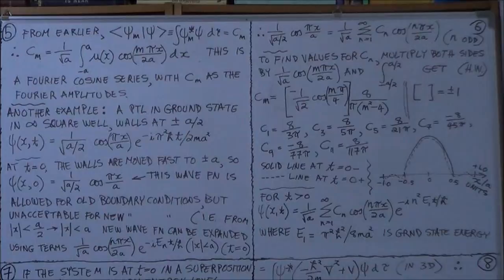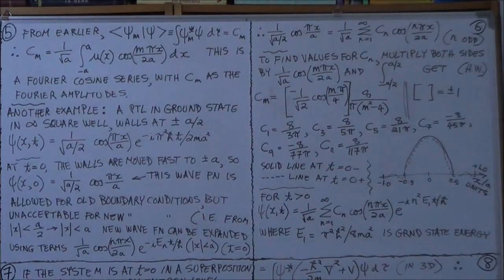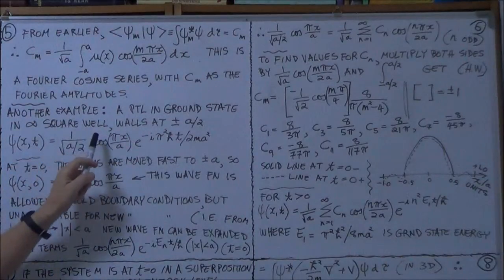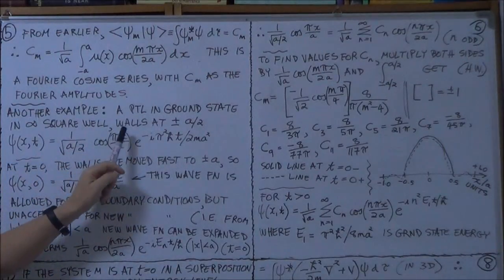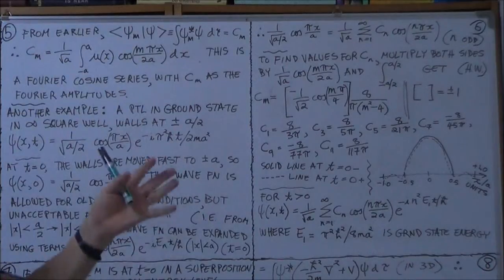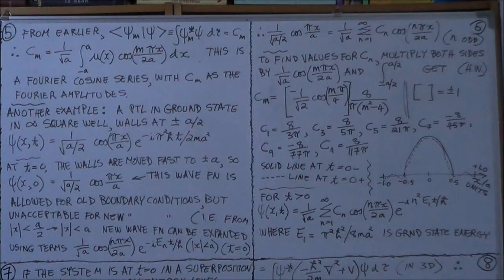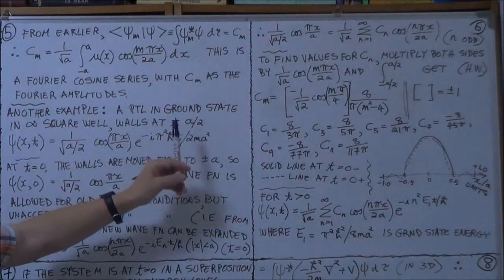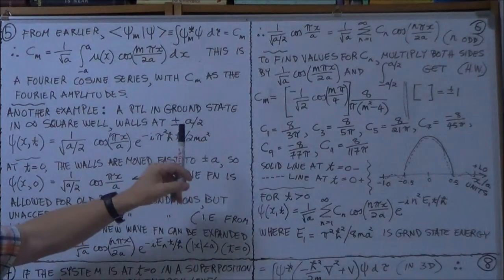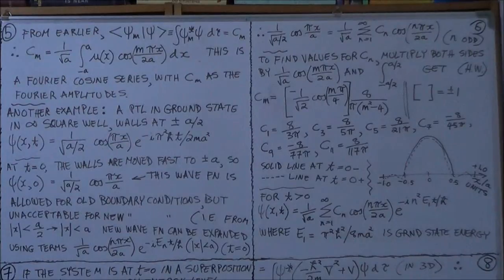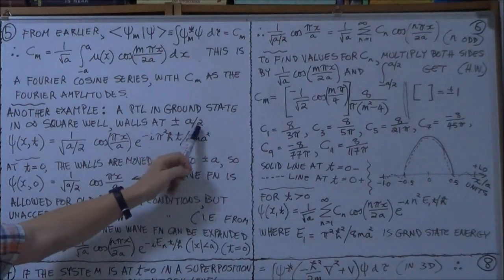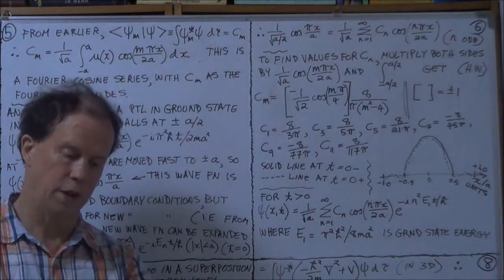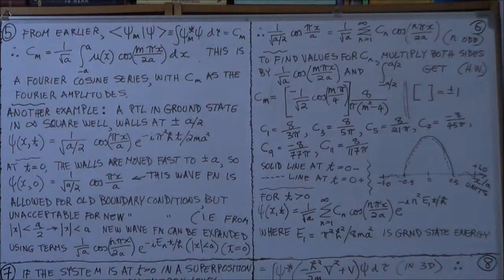Okay, now let's do another example. In this case, it's still, we're still working with the infinite square well. But this time, the walls, the barriers, are now twice as close. So instead of the infinite potential barriers, the walls, existing at x equals plus and minus a, they now exist at plus and minus a over 2, right?